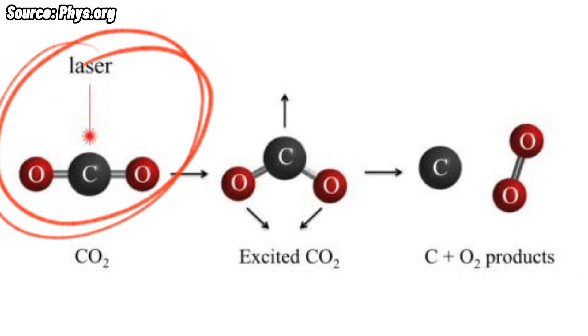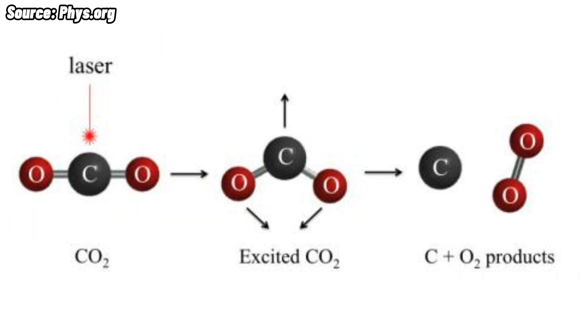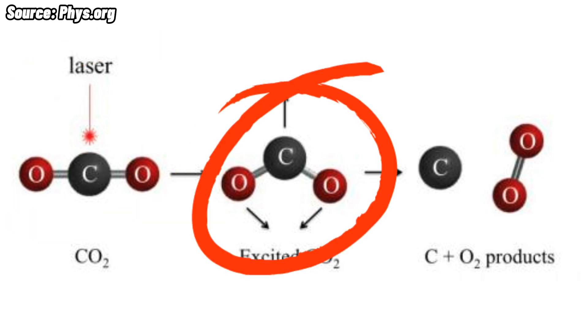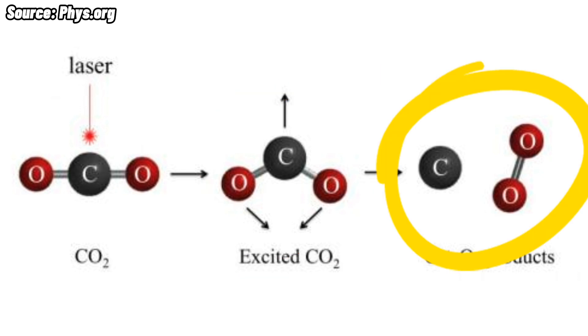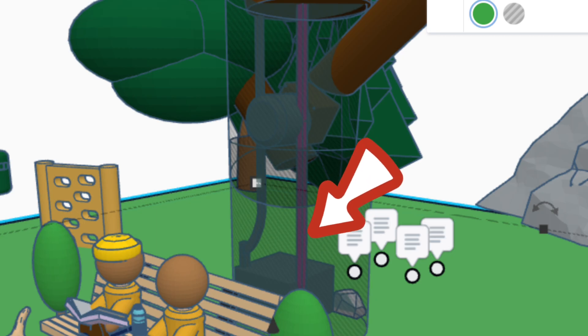The ultraviolet light will split up the carbon molecules and the oxygen molecules. And lastly, after the oxygen molecules combine together, the oxygen will be released from the branches.